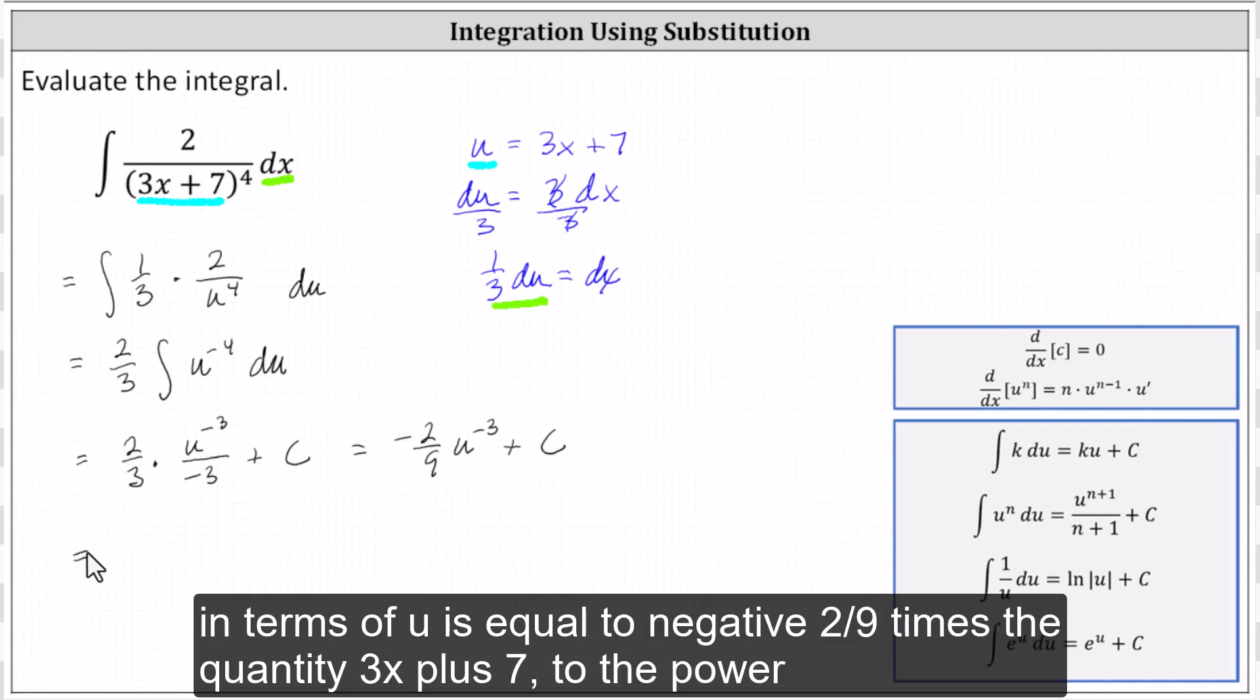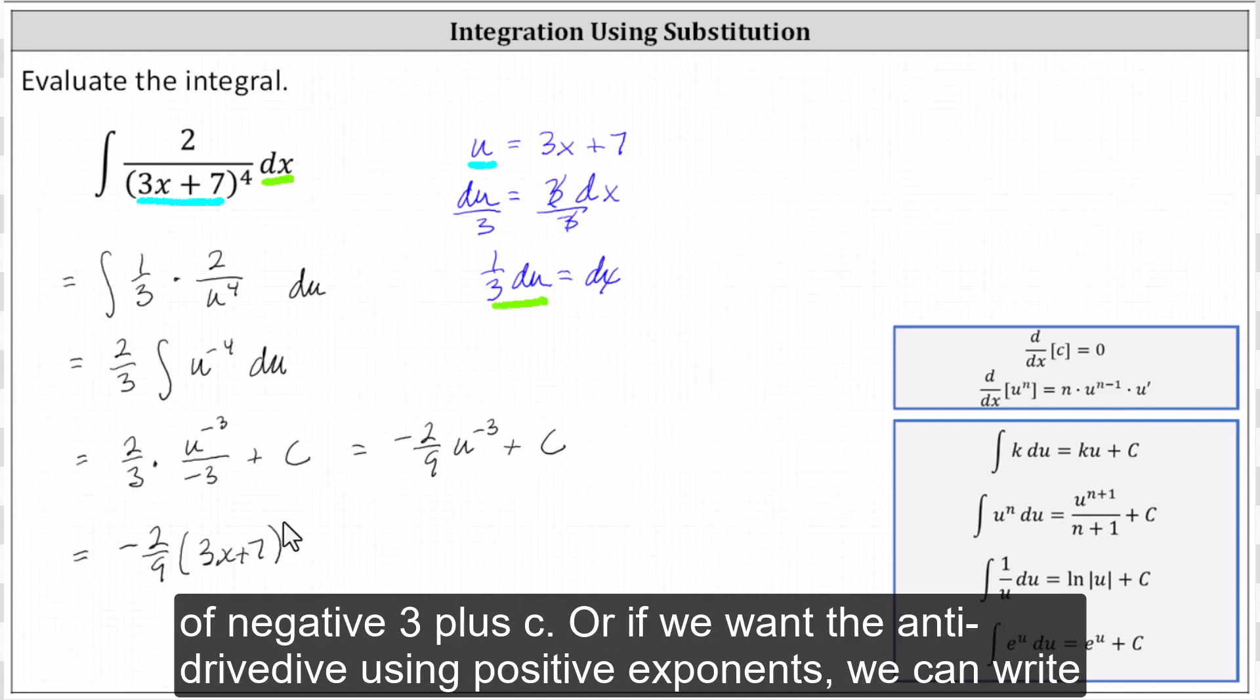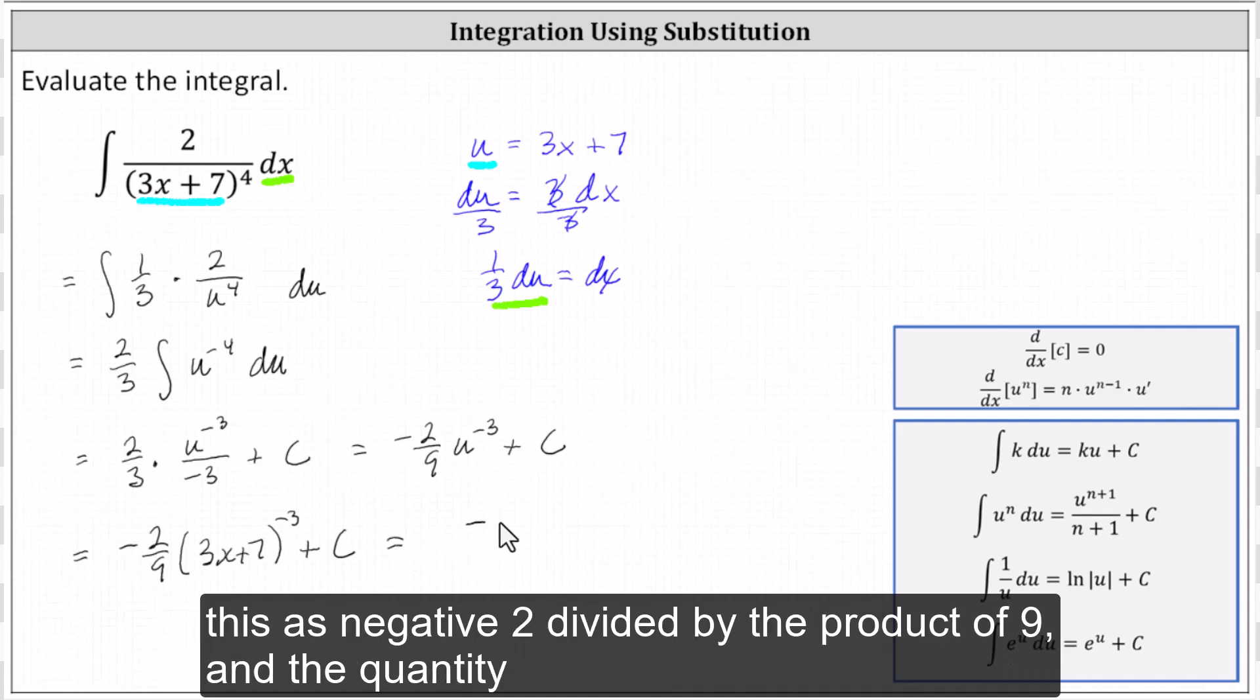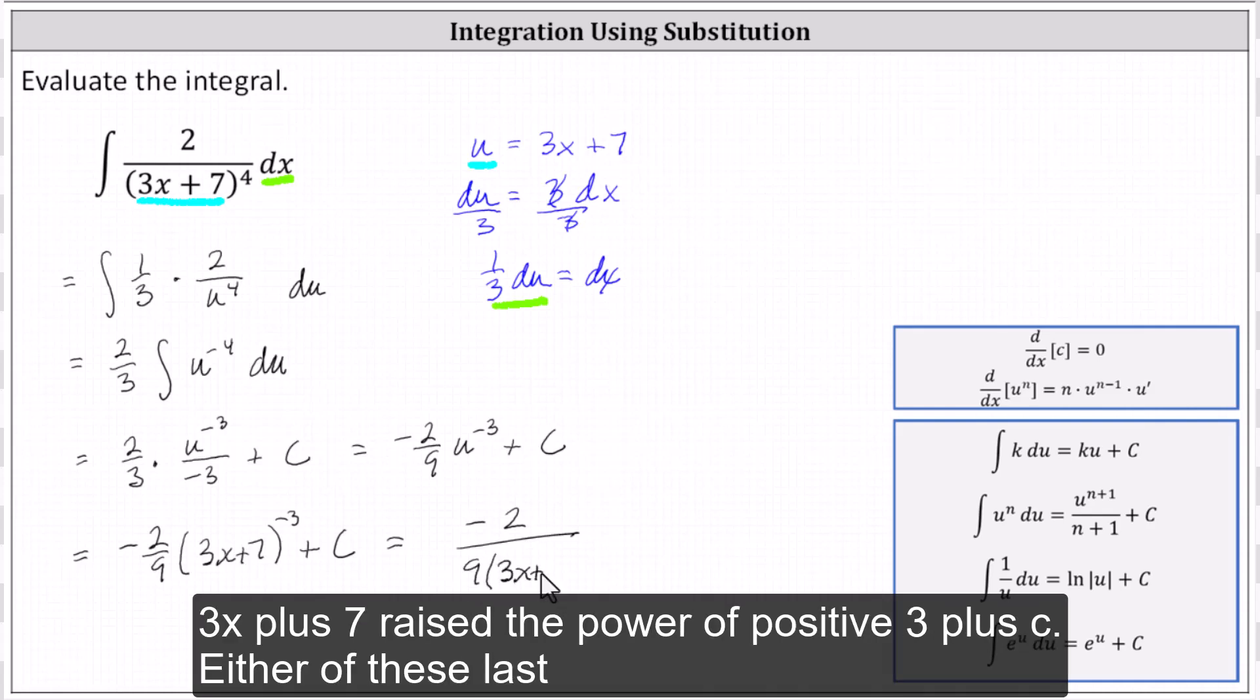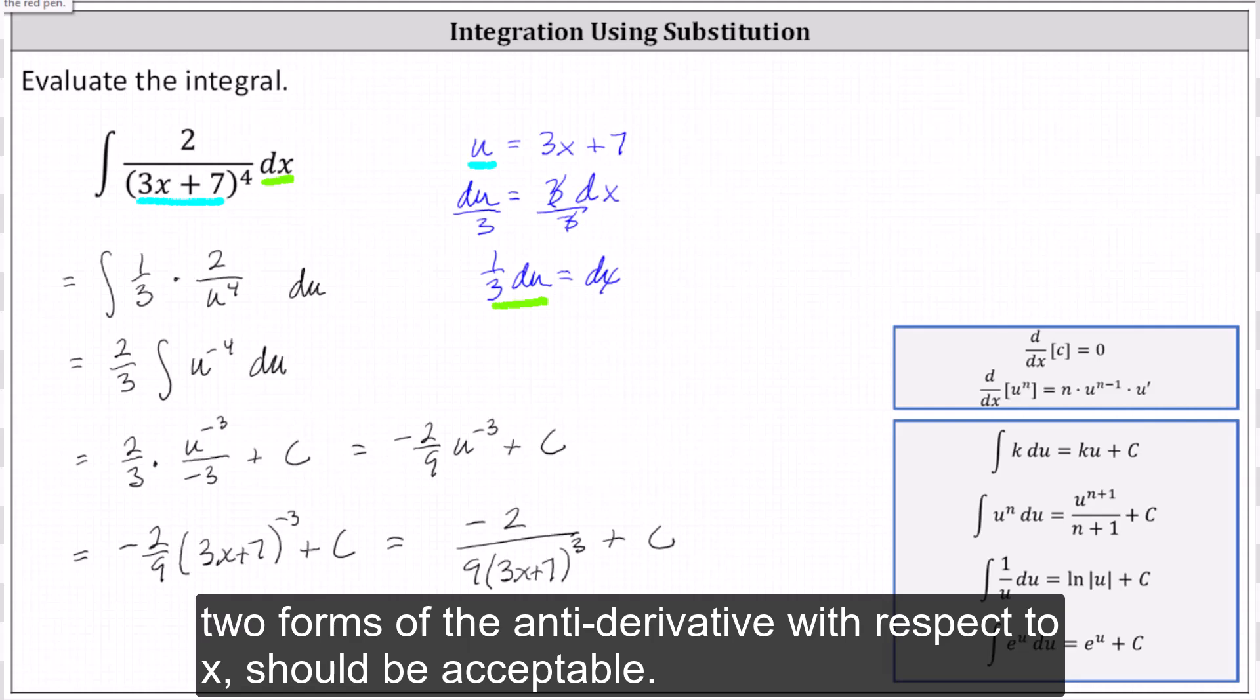The antiderivative in terms of x is equal to negative 2/9 times the quantity 3x plus 7 to the power of negative 3 plus c. Or if we want the antiderivative using positive exponents, we can write this as negative 2 divided by the product of 9 and the quantity 3x plus 7 raised to the power of positive 3 plus c. Either of these last two forms of the antiderivative with respect to x should be acceptable.